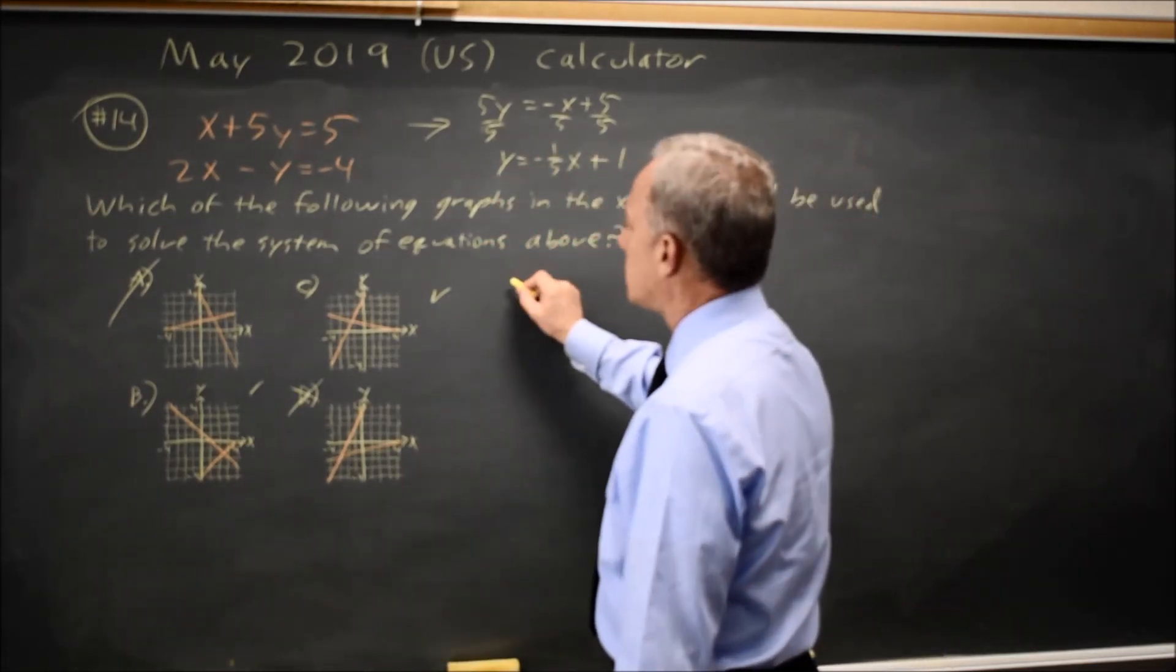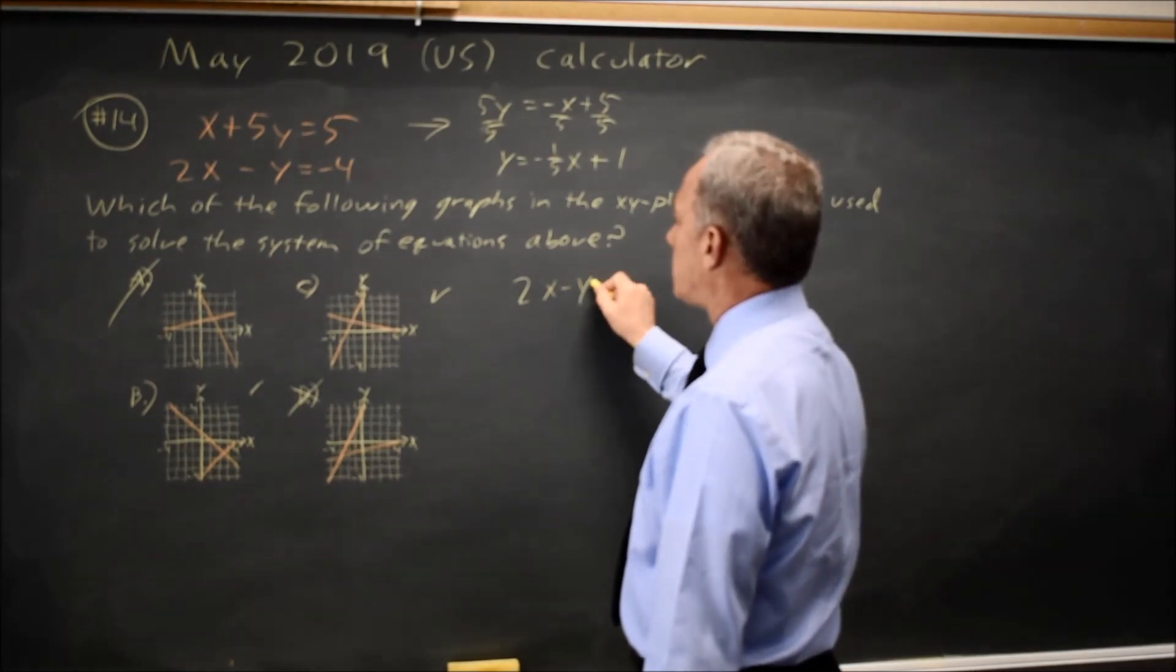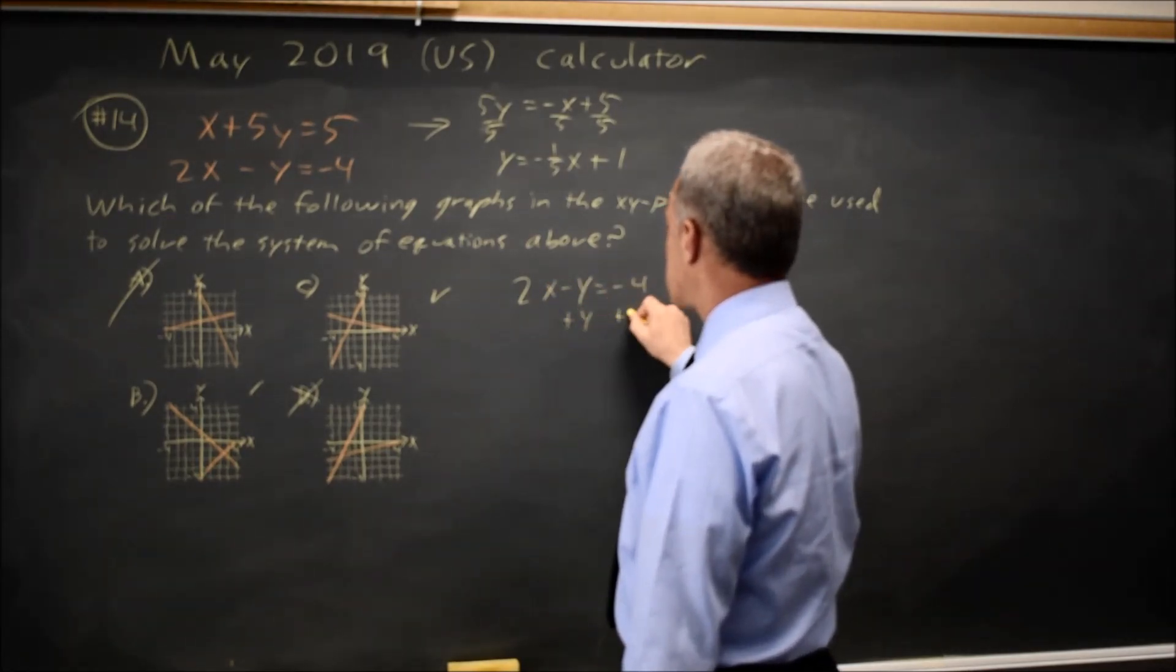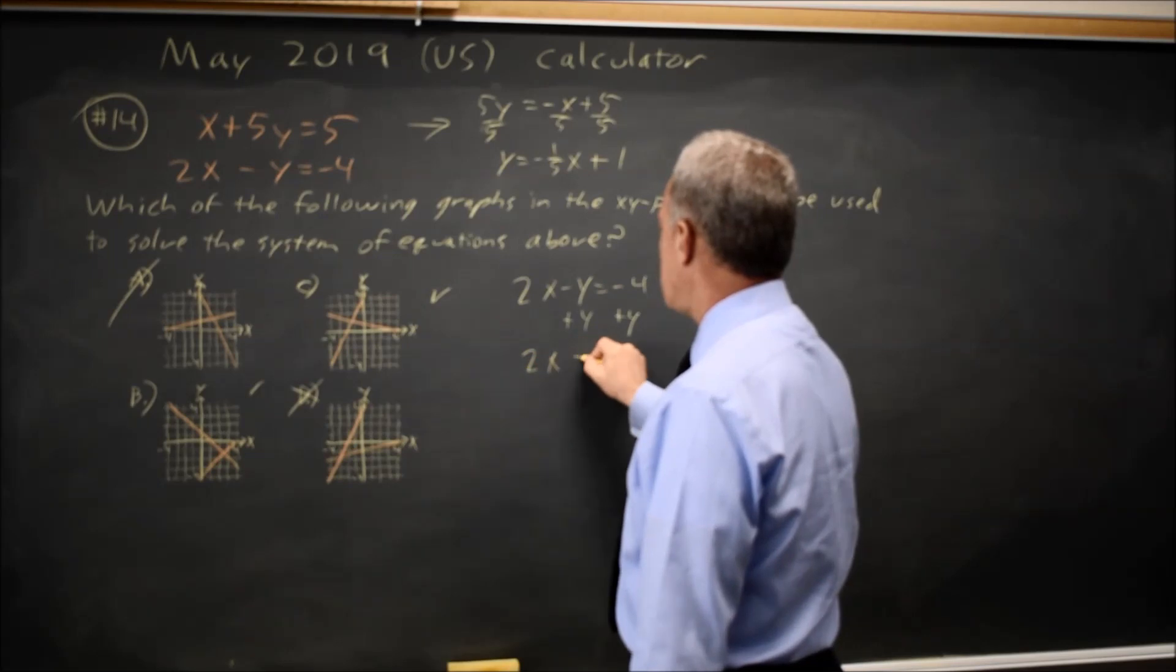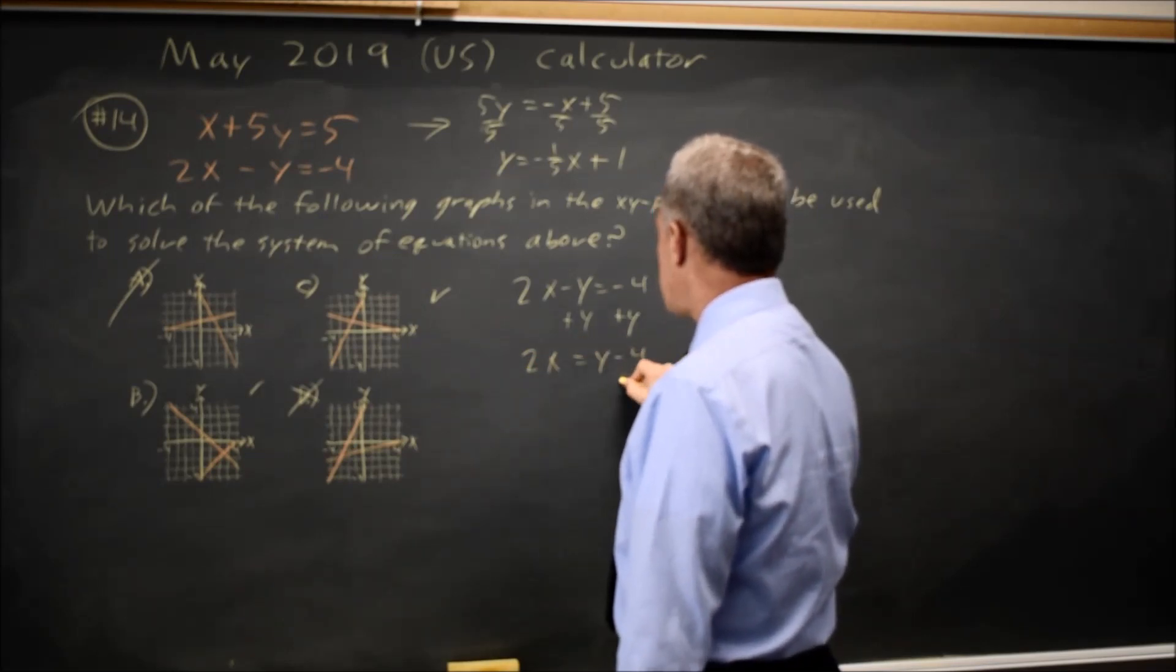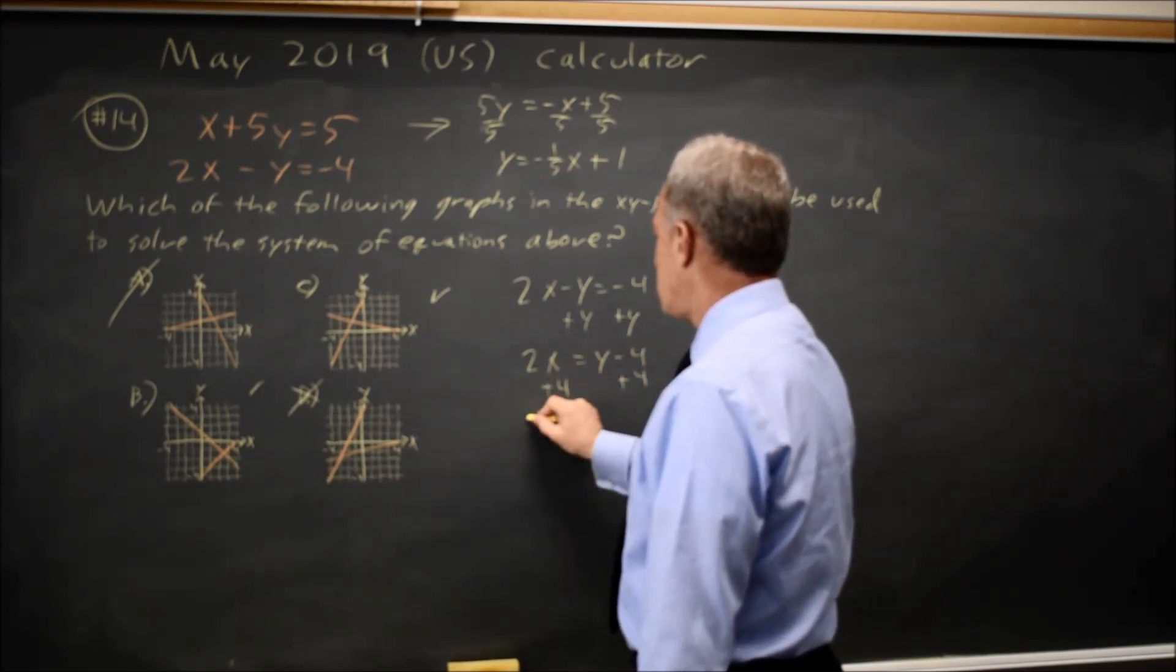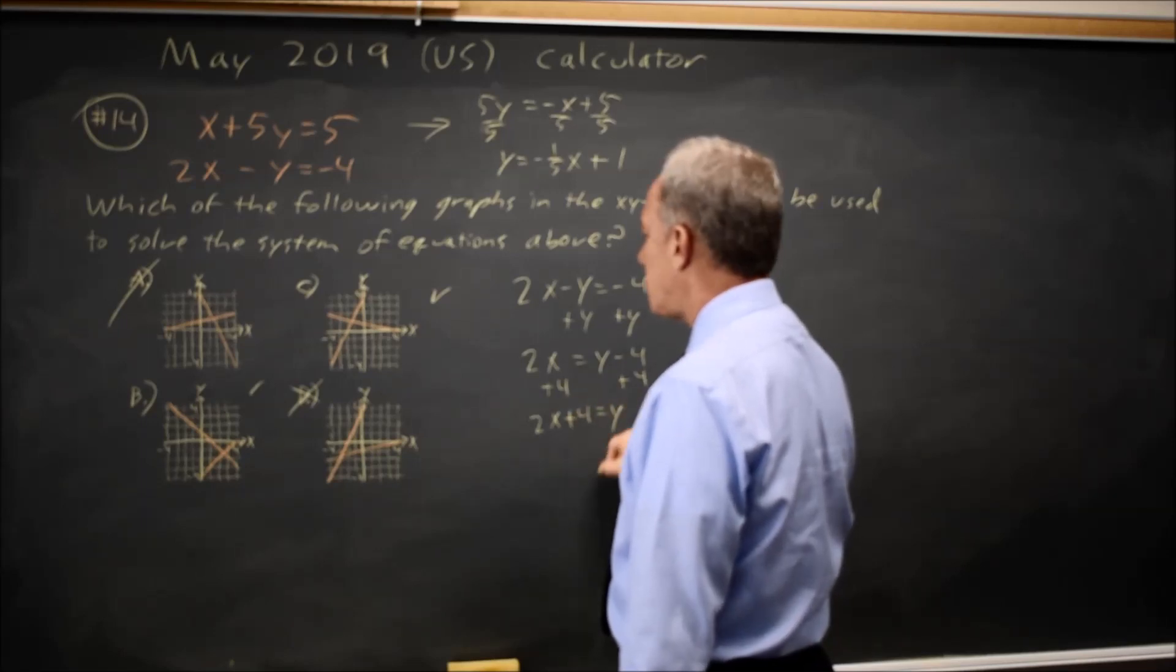Let's look at the second equation. 2x minus y equals negative 4. Let's add y to both sides. 2x equals y minus 4. Let's add 4 to both sides. 2x plus 4 equals y.